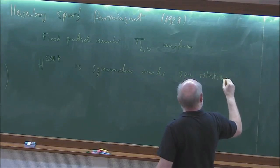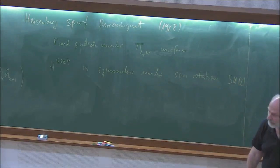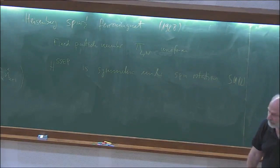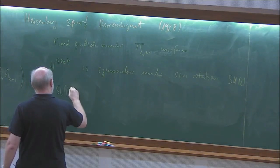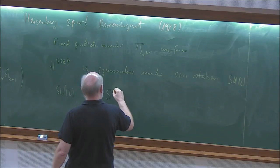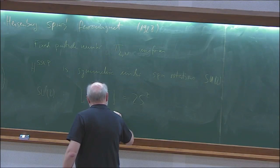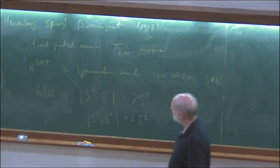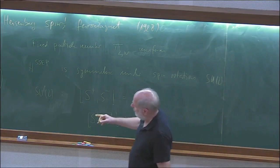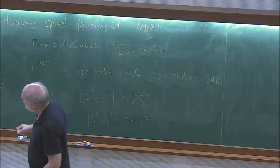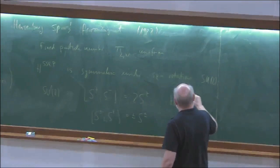The SSEP Hamiltonian is symmetric under spin rotations—it commutes with the SU(2) algebra. Recall the SU(2) commutation relations: [S+, S-] = 2 S_Z, and [S±, S_Z] = ∓ S±. One can build tensor representations: S±, S_Z = sum_K sigma_K^{±,Z}. These commute with H, which can be verified by explicit computation.